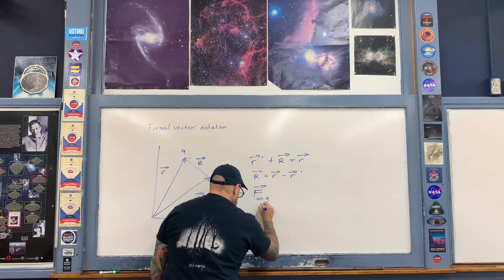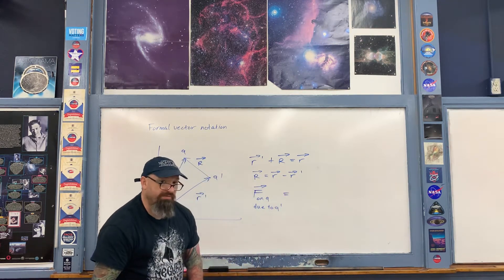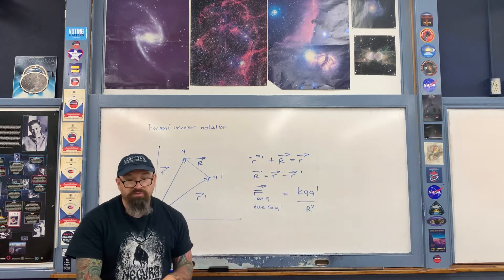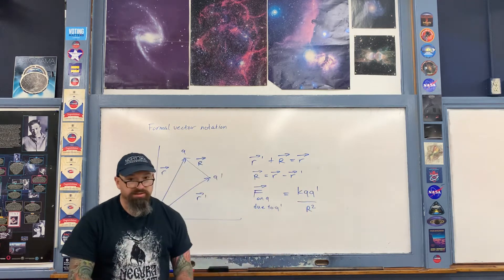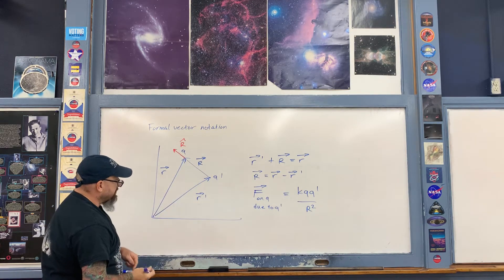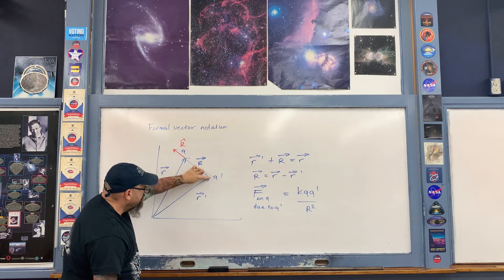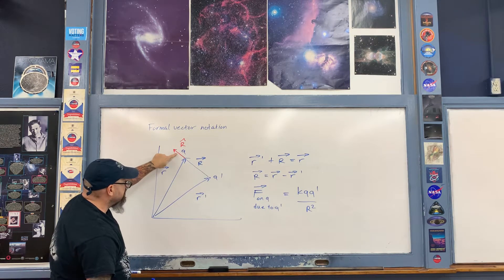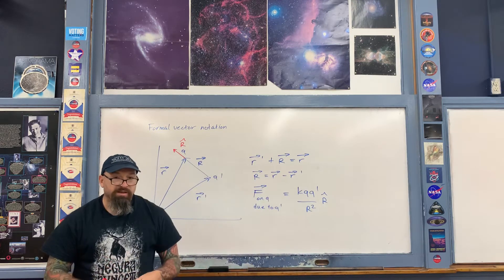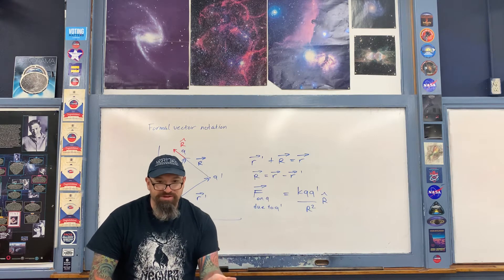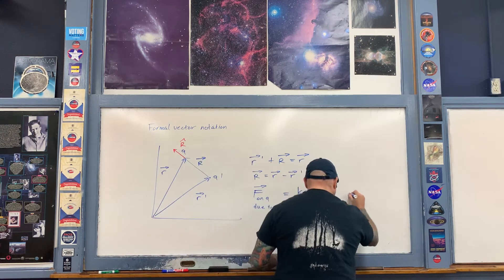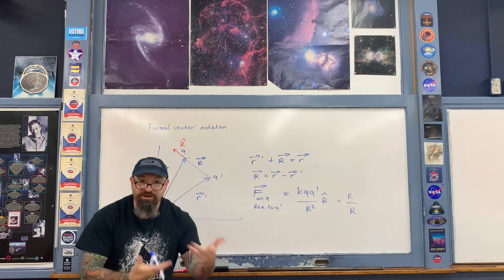The force on q due to q prime has magnitude k·q·q prime divided by the distance squared. To complete the vector description, we need a unit vector. That unit vector points from q prime toward q and is called R-hat. To express R-hat in terms of i-hat and j-hat, we multiply by R over R — that is, we multiply the expression by one in a useful form.